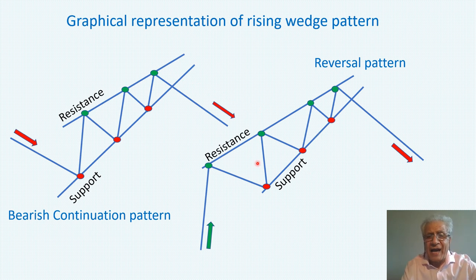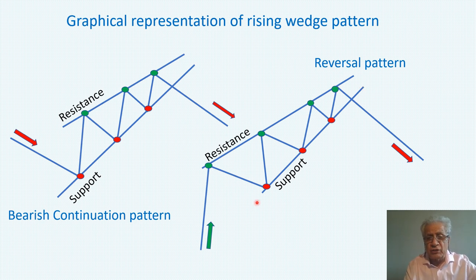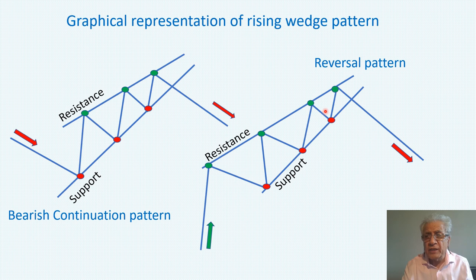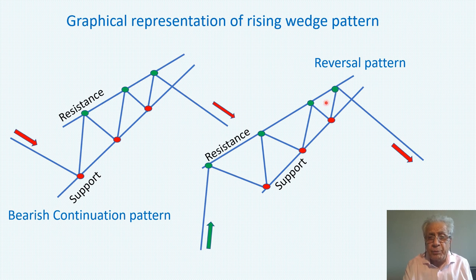The wedge must have at least three touches on both sides — on support and resistance level. That's the minimum; you can have more. If there are more touches, the pattern is more valid. The trading volume keeps on diminishing with advancing trading activity and weakening of the demand at higher levels. Finally, price breaks from the support line and goes downward.